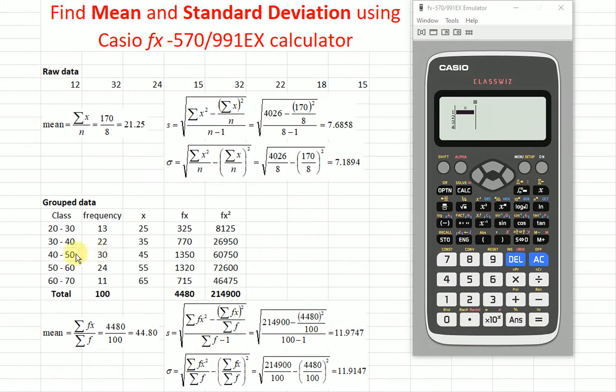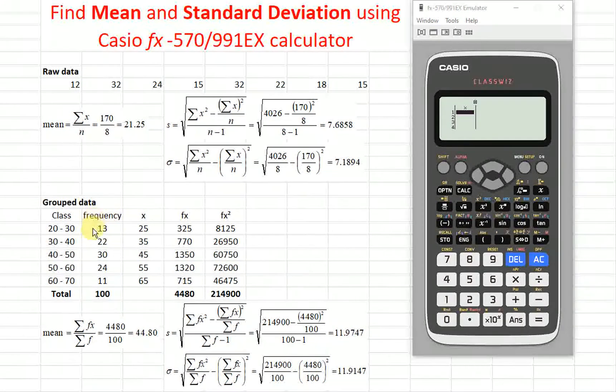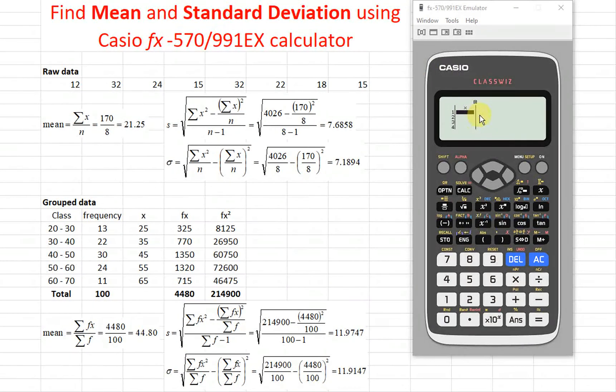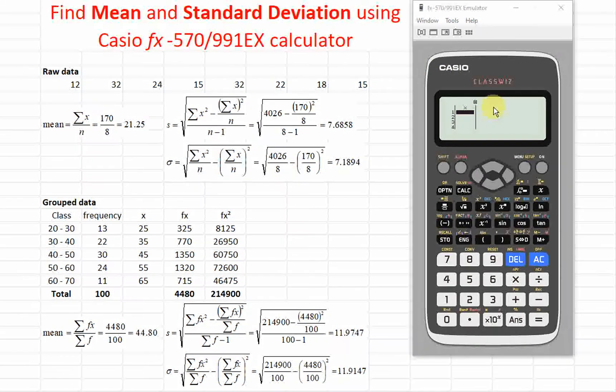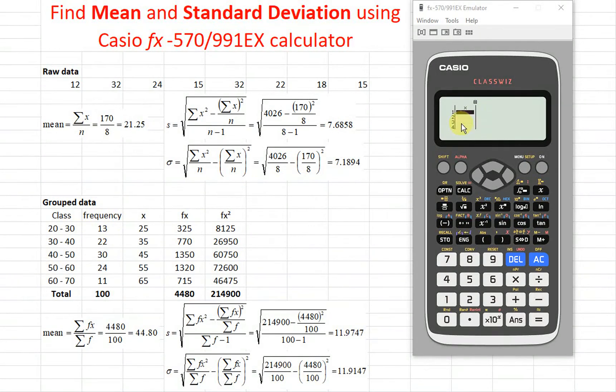However, for this row, as we can see, for grouped data, we have frequency. Unfortunately, as we can see here, we don't have any column for frequency. So what we have to do, we just have to shift menu, means that we go to the setup.